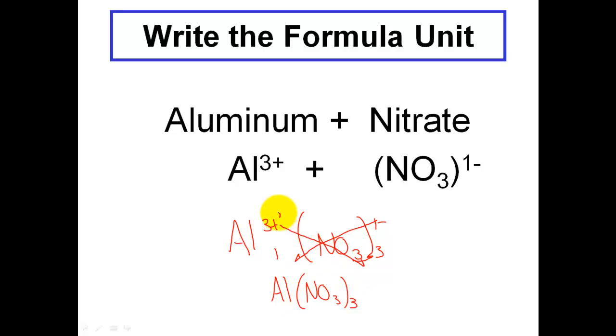What I end up with in this case is Al1 and NO3 with some parentheses. I'll have 3 of them. So once again, I crossed my 3 plus all the way over there. And I crossed my 1 all the way over here. And the formula unit is Al(NO3)3.